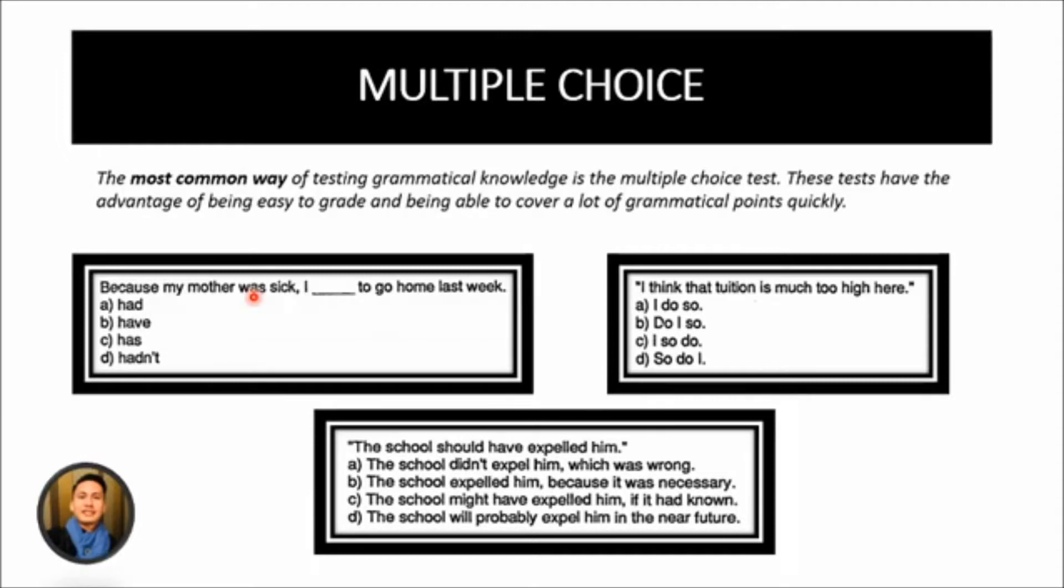The most common type of multiple choice grammatical item is one in which the test maker gives the testee a sentence with a blank and four or five choices of a word or phrase which completes the sentence correctly. For example, this one: because my mother was sick, I blank to go home last week. So, you have here the four choices.